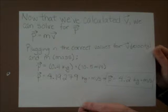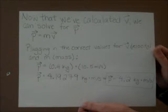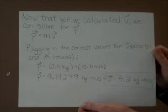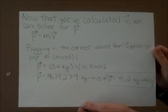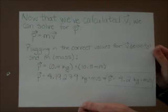Now that we've calculated velocity, we can solve for momentum. P equals m times v. Plugging in the correct values for velocity and mass, P equals 0.4 kilograms times 10.5 meters per second, giving a total momentum of approximately 4.2 kilogram meters per second.